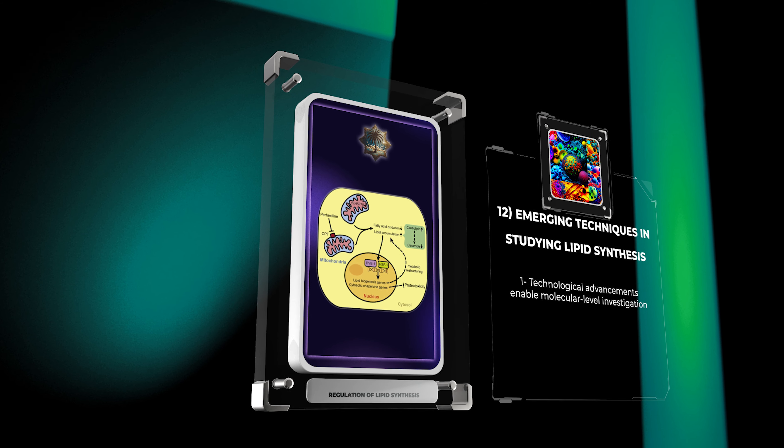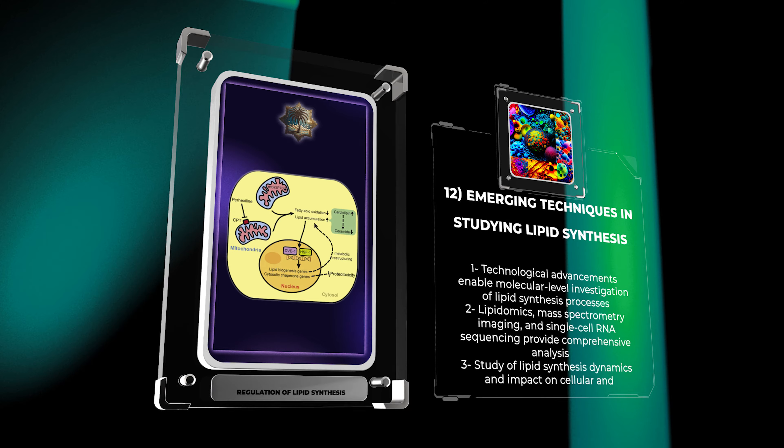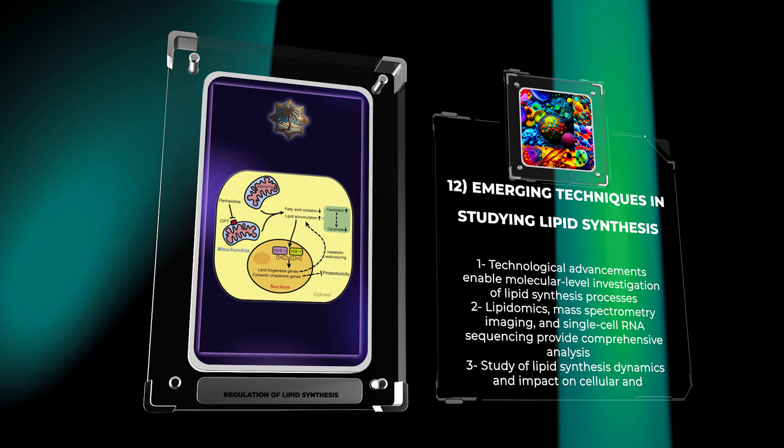Technological advancements have revolutionized our ability to investigate lipid synthesis processes at a molecular level. Techniques such as lipidomics, mass spectrometry imaging, and single-cell RNA sequencing have enabled comprehensive analysis of lipid species, lipid localization within tissues, and gene expression changes in specific cell types. These emerging techniques provide valuable tools to study lipid synthesis dynamics and assess their impact on cellular and organismal physiology.